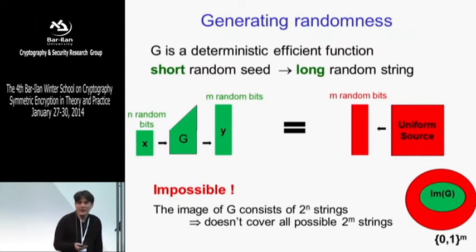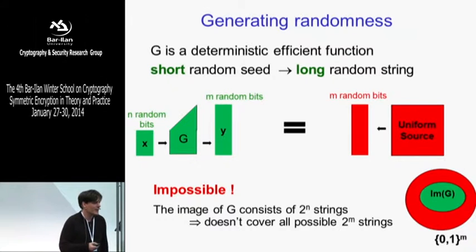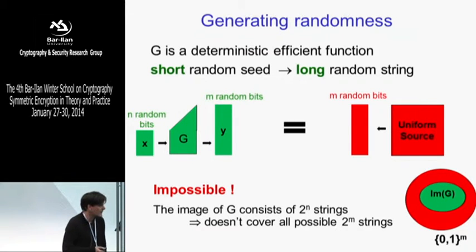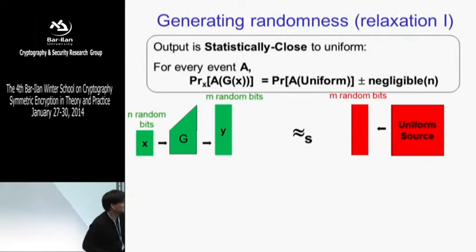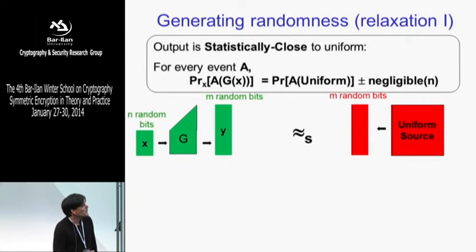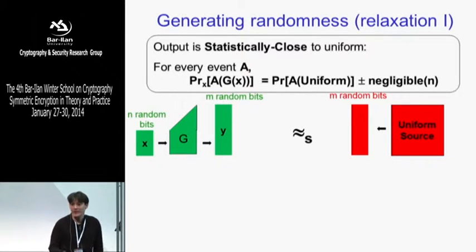Since this is impossible, we have to relax the definition. We can add fancy words like 'pseudo' or something like this. More generally, when we have a definition we can't achieve, we try to relax our requirements. The relaxation we'll use is statistical closeness — the S stands for statistical. To say something is statistically close, we need to introduce a metric, some notion of distance.